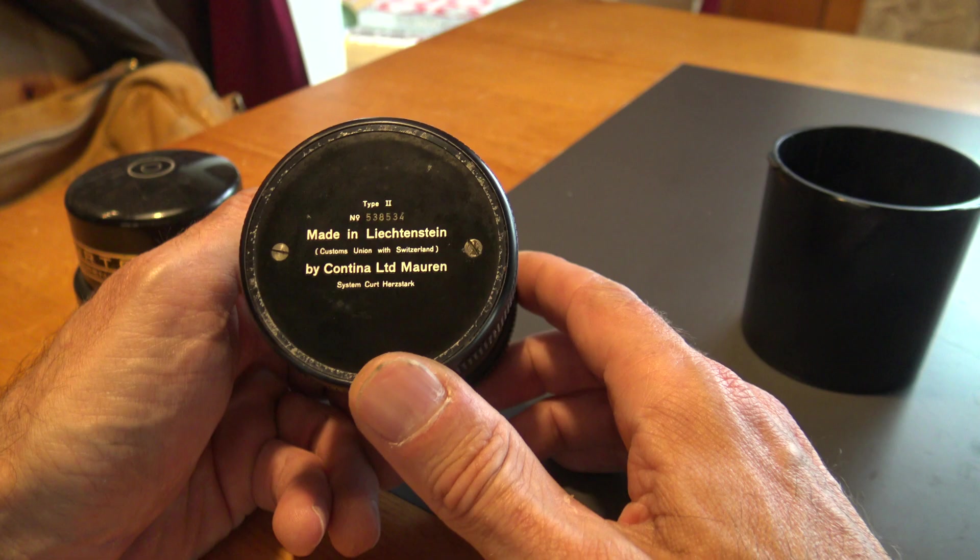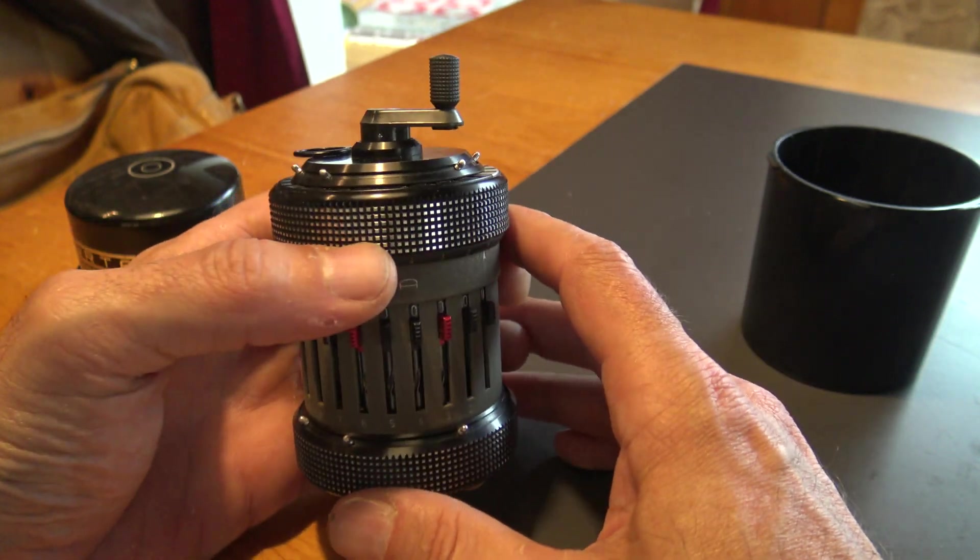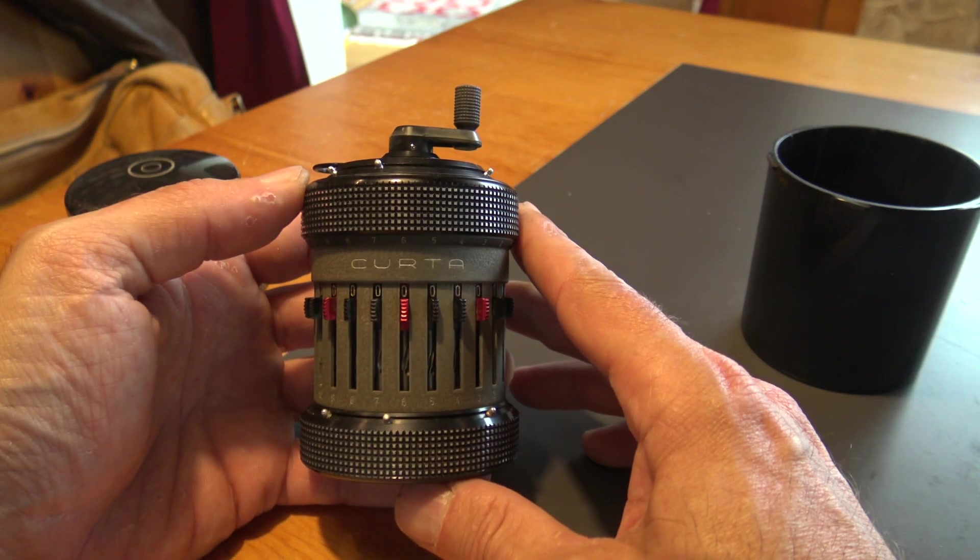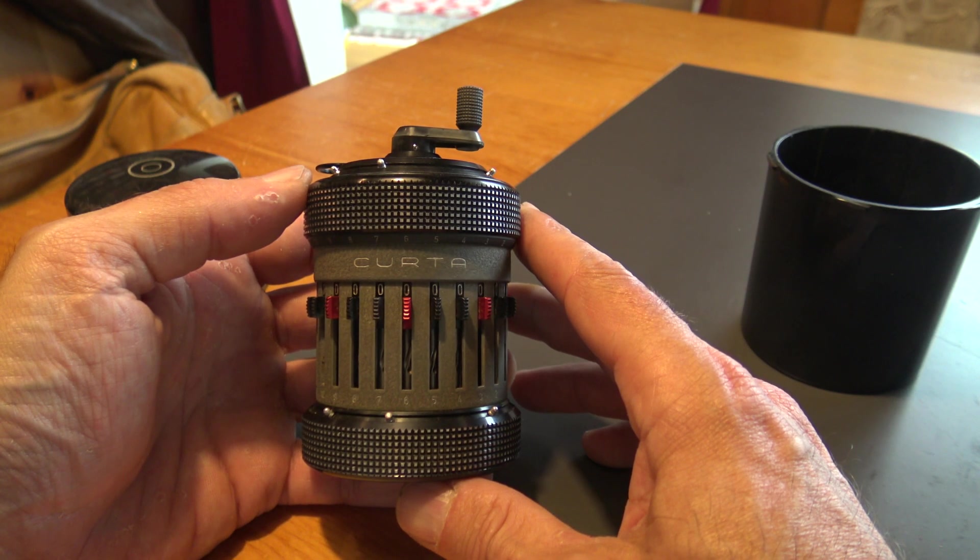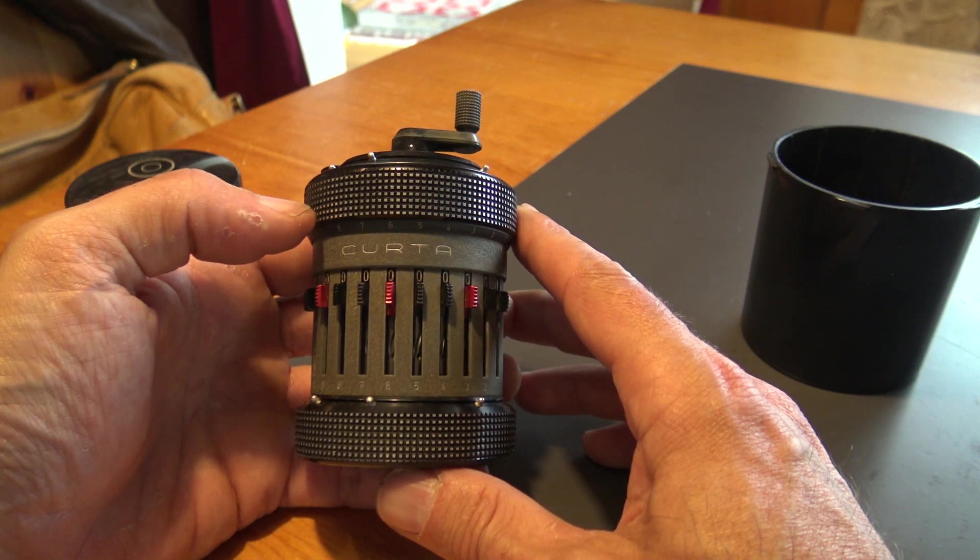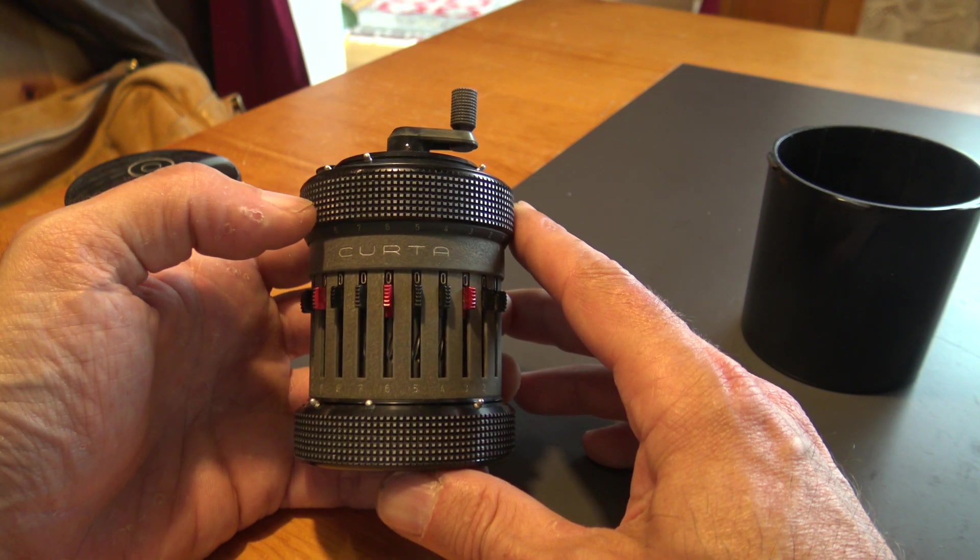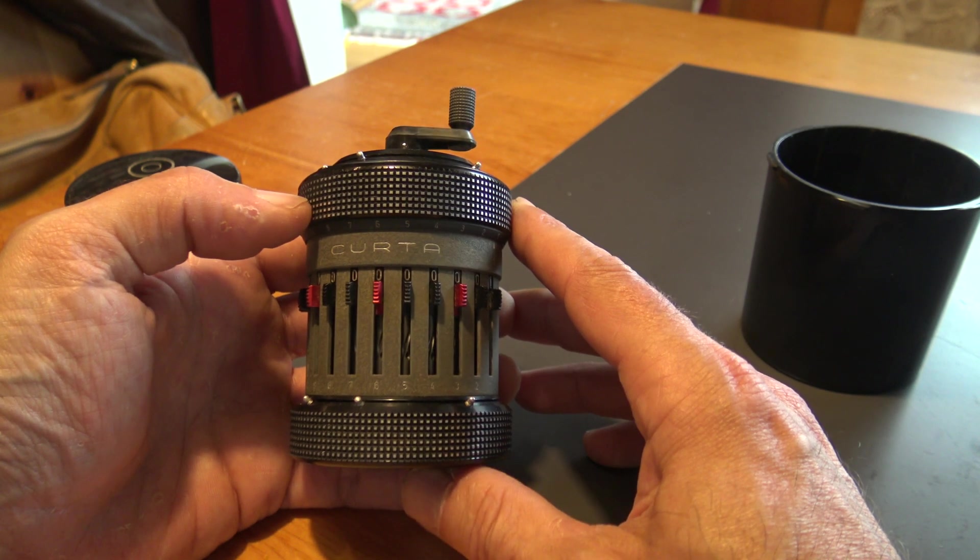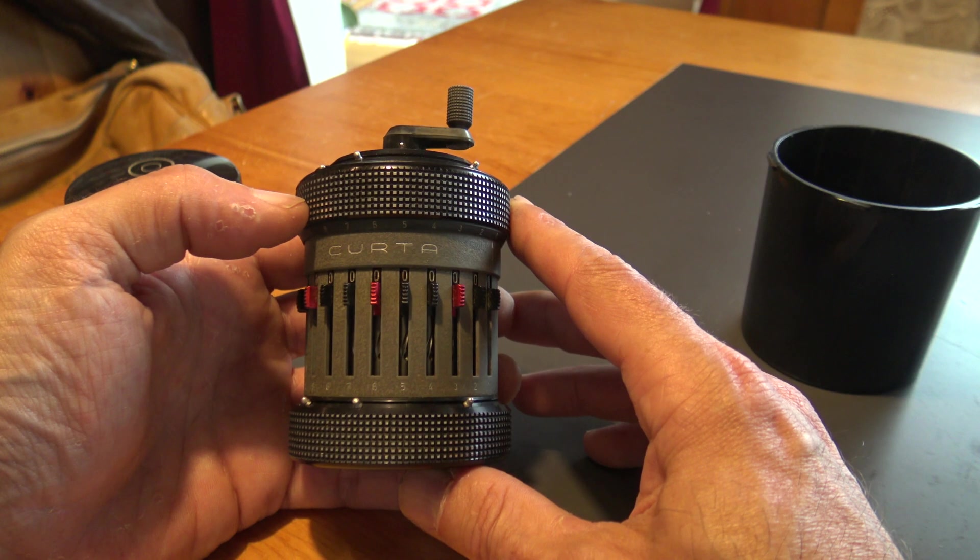It was made in Liechtenstein and it's made of 600 different pieces inside. A nice story about this calculator is a couple of years ago an American wanted to remake it, so he contacted the original company who made it and was able to obtain all the projects, all the plans to build it.